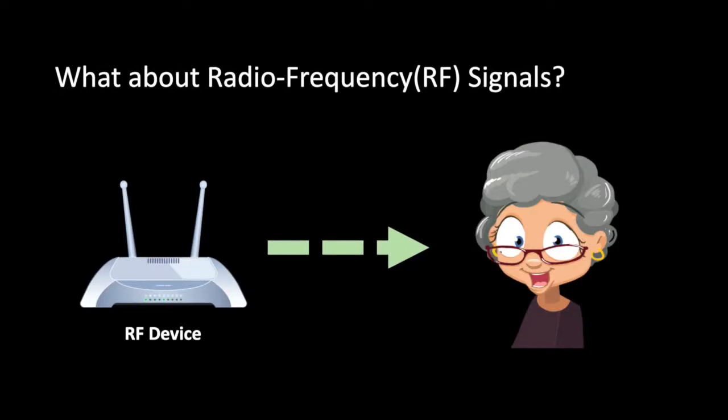Here's an idea. Instead of using cameras, we can use radio frequency signals to capture my grandma's daily life. Let me explain why it's possible. Radio frequency signals can actually capture people's activities, but they are hard to be interpreted by humans.